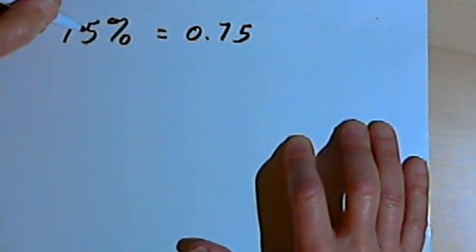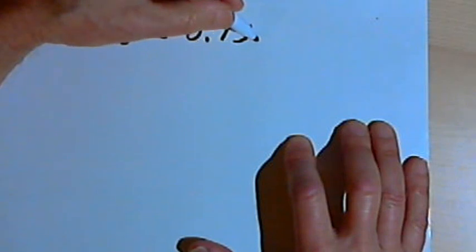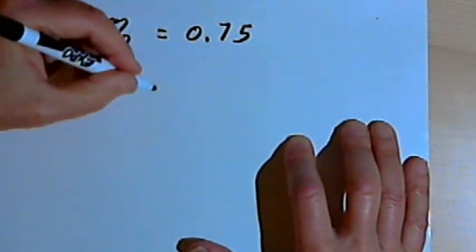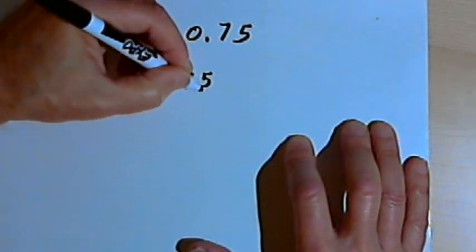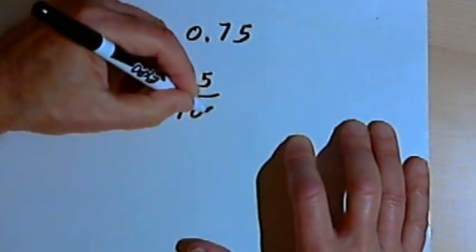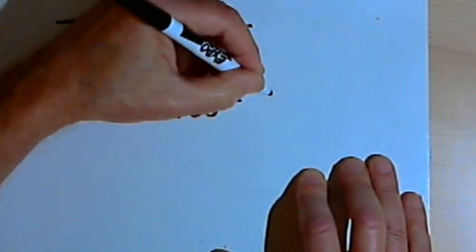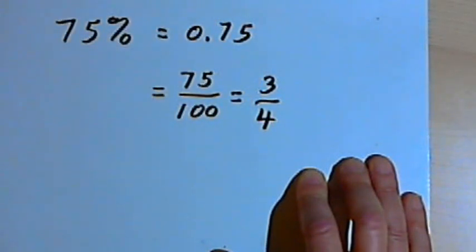If I want to turn it back into a percent, I would just reverse the process, move the decimal point back two places to the right, I'd have 75, and I'd add a percent sign. To turn it into a fraction, I'm just going to take that 75 and put it over 100. I've got 75 over 100. It's a fraction, but I want to reduce it. So I'll turn that into 3 over 4.